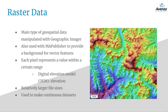Raster data is the main type of geospatial data manipulated with Geographic Imager, but it can also be used in Map Publisher to provide a background for vector features. In a raster dataset, each pixel represents a value within a certain range. For example, in the digital elevation model seen here, each pixel might represent an elevation value, such as meters above sea level. A caveat of raster data is that it has a relatively larger file size.